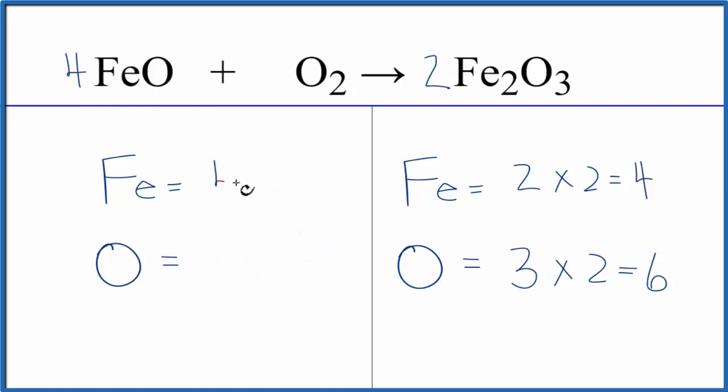We have one iron times four that gives us four iron atoms, those are balanced. Then the oxygen atoms, we have one times four plus the two in the O₂, that gives us six and now this equation is balanced.